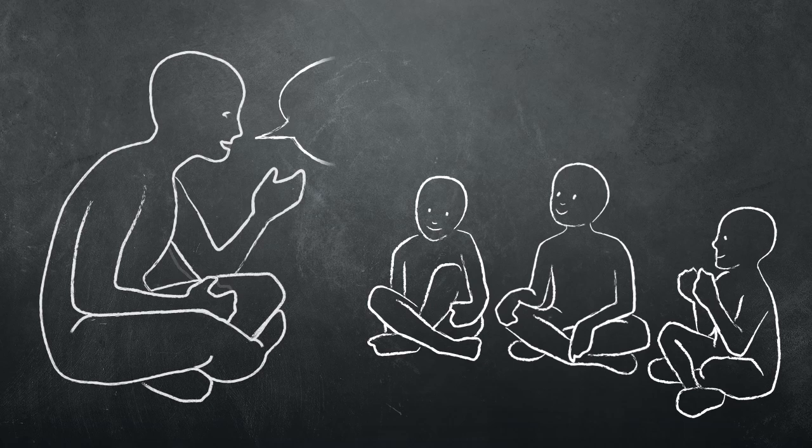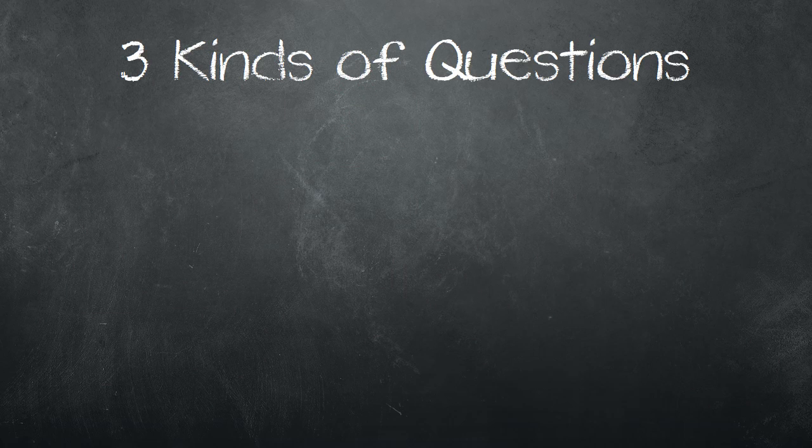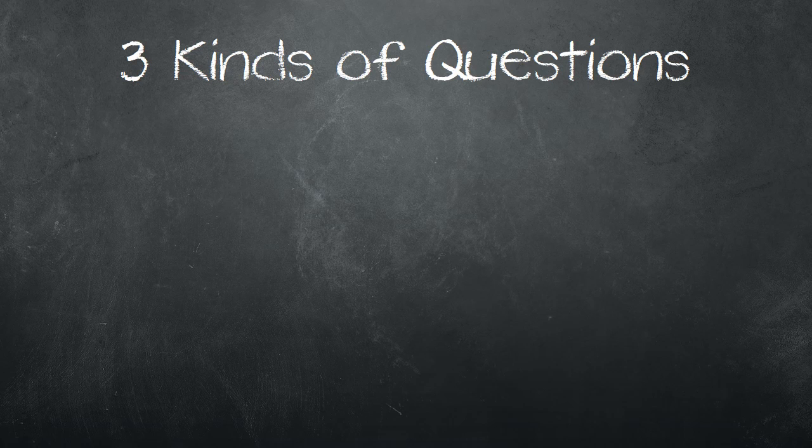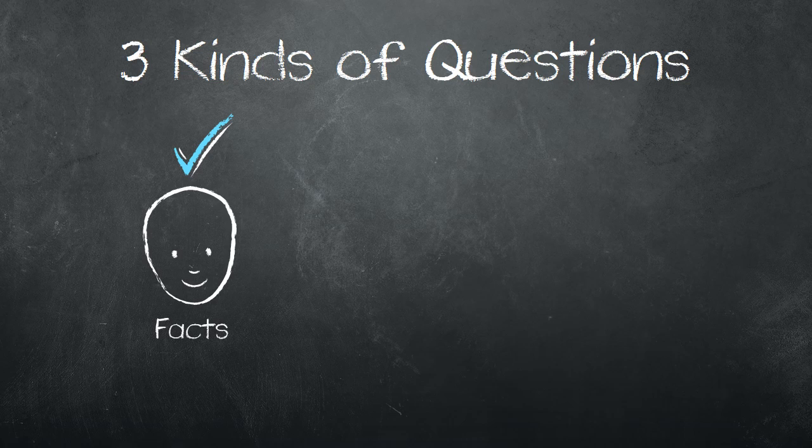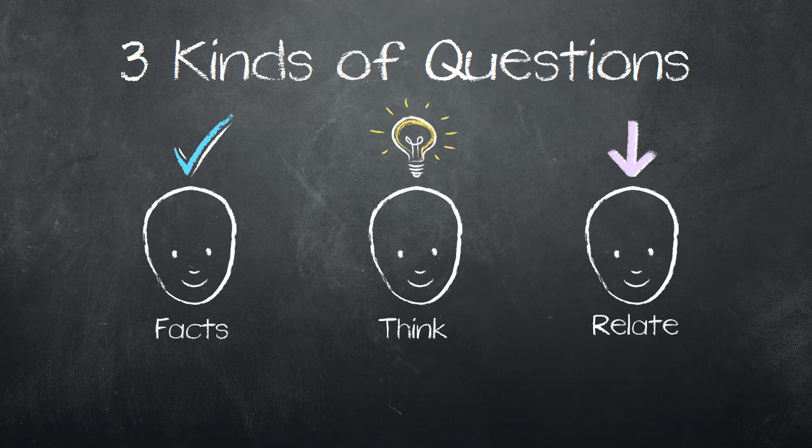In question and answer, the teacher asks three kinds of questions. The first kind of question is about the facts of the story or text. The second kind of question makes the students think about the lesson. And the third kind of question helps the students relate the lesson to their own lives.